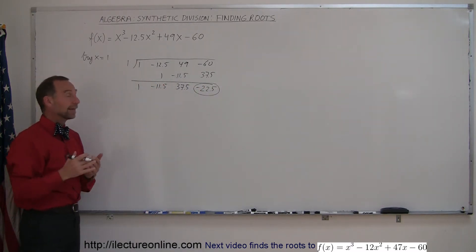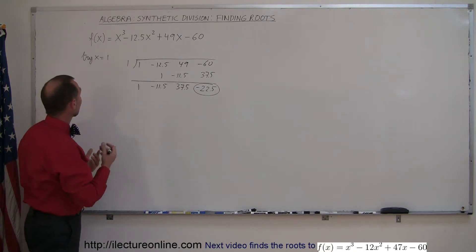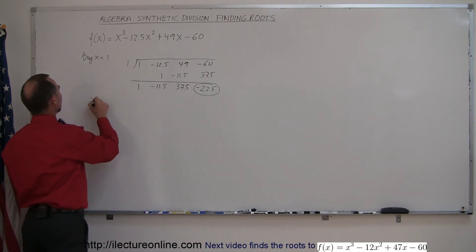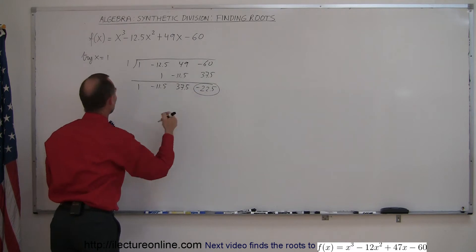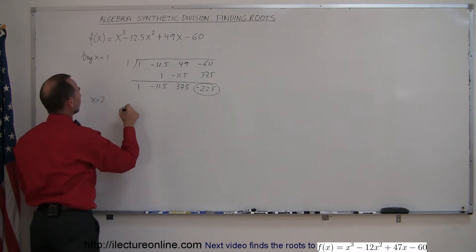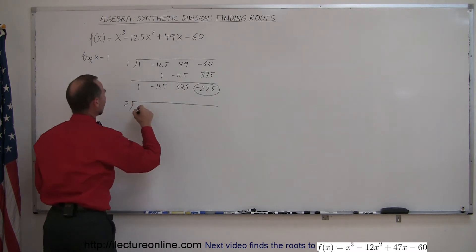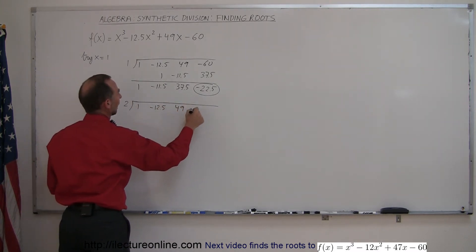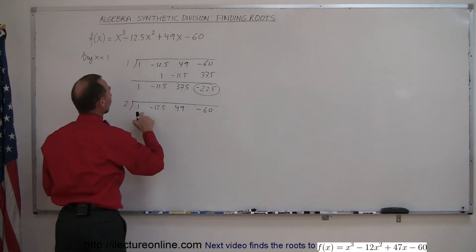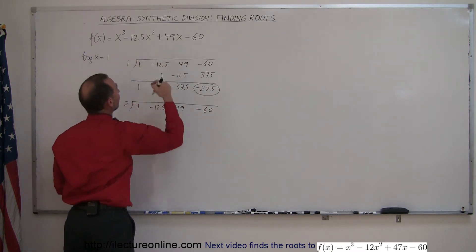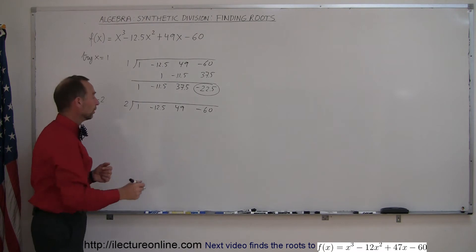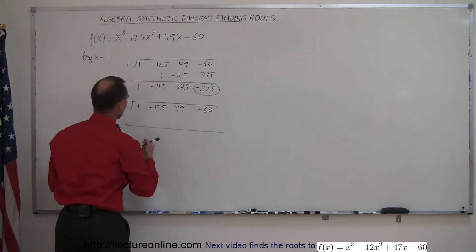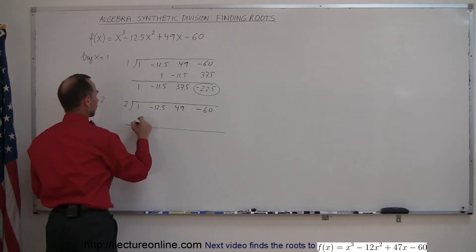Let's try the next guess, x equals 2, and see if we get closer to having this go to zero. We again put down the coefficients: 1, minus 12.5, 49, and minus 60. These are the coefficients of the individual terms in our polynomial. Drop the first number, 1 times 2 is 2, add them together you get minus 10.5.